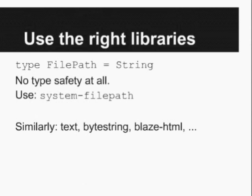To summarize what we've covered: we want to use the right libraries and the right approaches. File path is one of my pet peeves — there's nothing in the type system to prevent using a normal string to open a file, and there are character encoding issues involved. For these kinds of cases, I recommend using better libraries: system-filepath, containers, text, bytestring, blaze-html. There are many solid libraries that help avoid problems at the type level and usually happen to be much more efficient too.